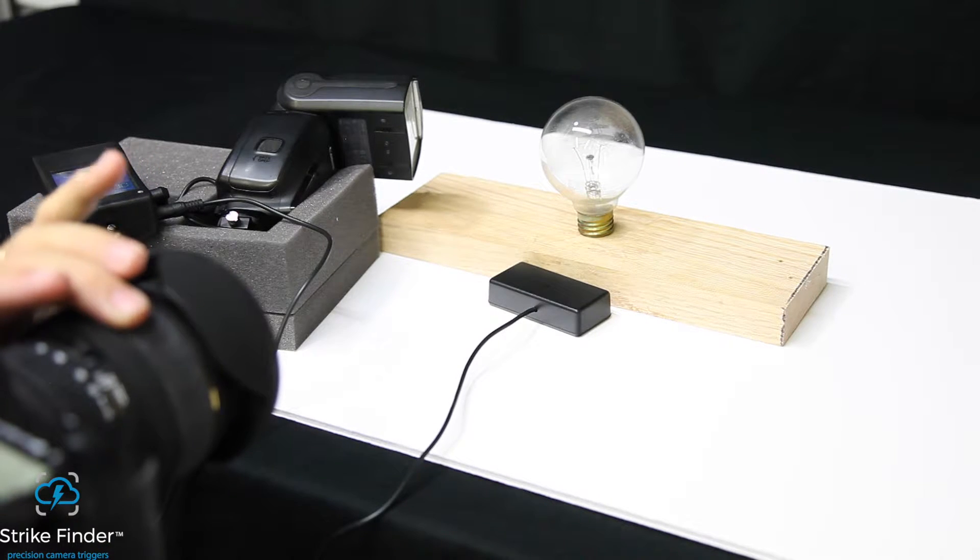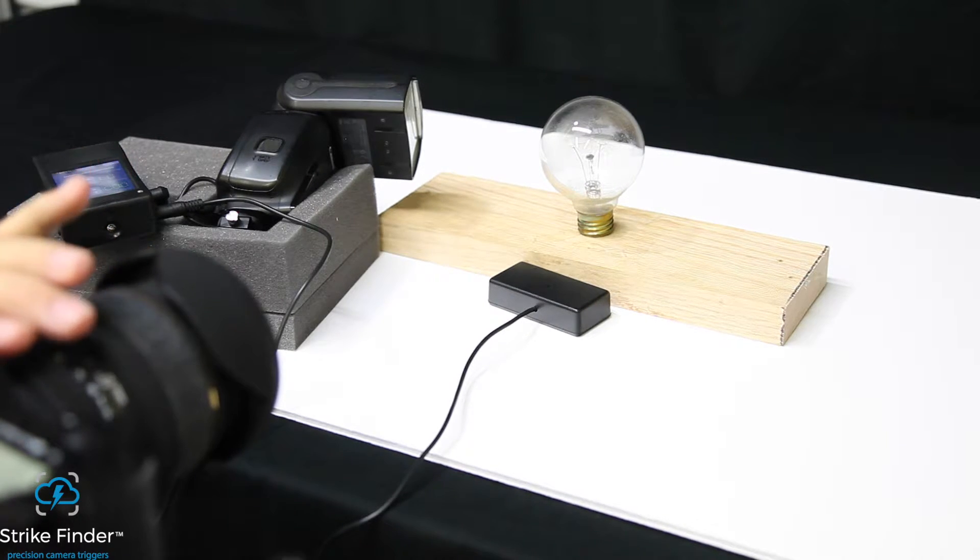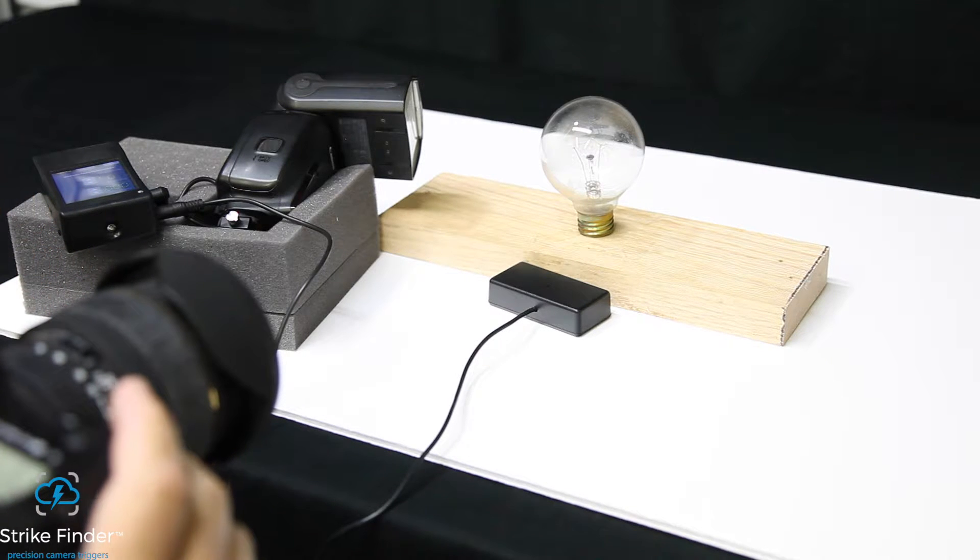Set up your camera. Find your focus. Our camera settings are ISO 100, shutter speed of half a second, and we'll take several test shots to find the proper f-stop.